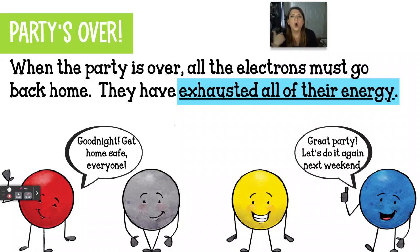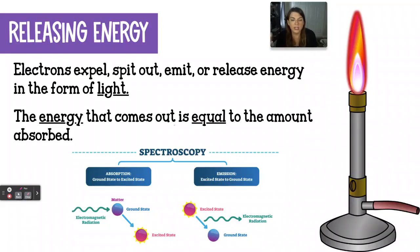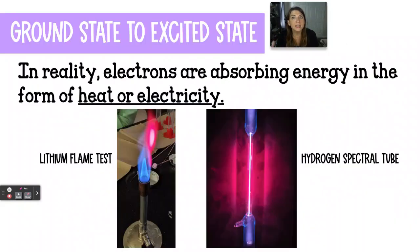This is the electrons exhausting all of their energy and having to go back to where they live, the ground state. Now in the real world, outside of this analogy, really what happens is that the electrons are going to emit energy in the form of light. Emit, expel, spit out, or release energy in the form of light. In the lithium flame test, we have a bright pink flame. Fire is just heat and light at the same time. So that light energy happens to be pink. And the same with the hydrogen spectral tube, that hydrogen gas inside the tube is being fed electrical energy.